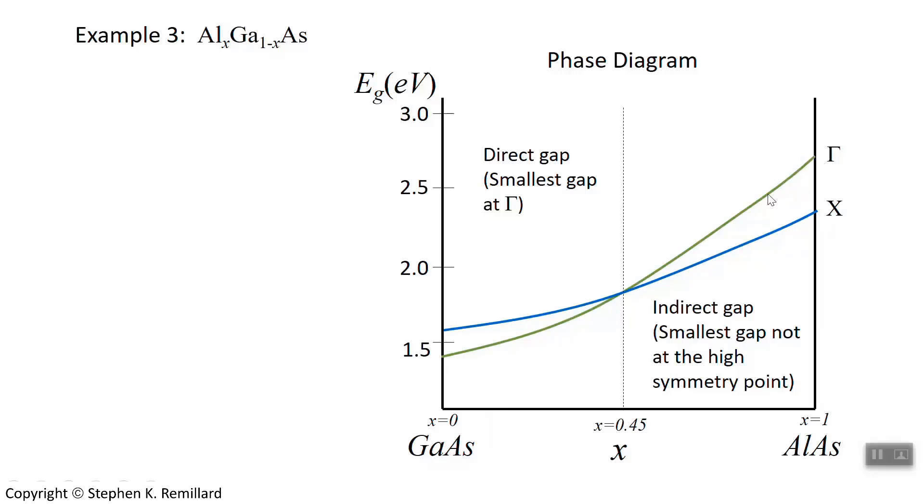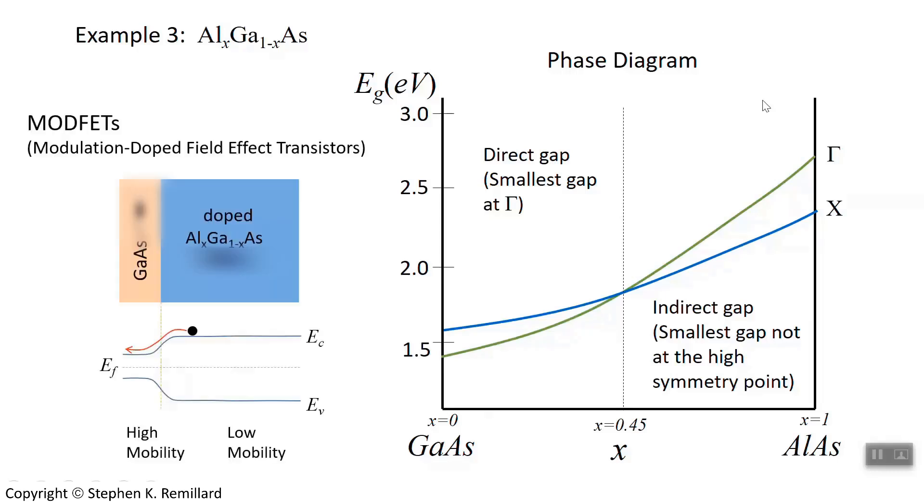However, we could be thinking about the gamma direction as well if we provide high energy photons, for example, to make the transition. So I have these bandgaps, and I can adjust them with the x ratio. Look at the range, it's fairly wide from about 1.42, which is pure gallium arsenide, up to about 2.6, which is pure aluminum arsenide. This material is useful in high electron mobility transistors, or MODFETs, modulation-doped field effect transistors.